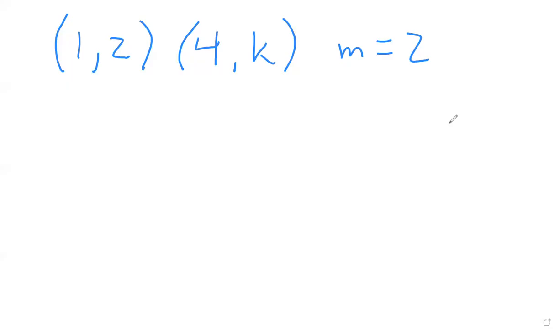Problem number seven: find the value of k so that the line passes through (1,2) and (4,k) and has a slope of 2. This is one of those problems that we've done in class